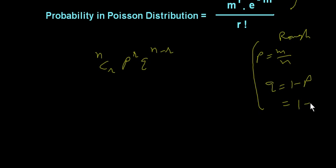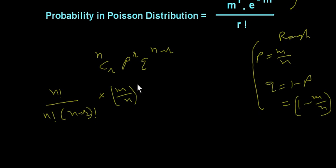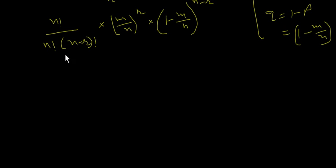So q will be 1 minus m divided by n. When we expand n combination r, it will be n factorial divided by r factorial times n minus r factorial. And we substitute p's value as m divided by n to the power r, and q's value as 1 minus m divided by n to the power n minus r. Now we will open this combination.